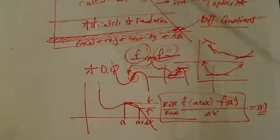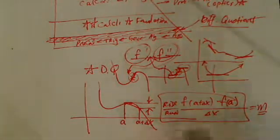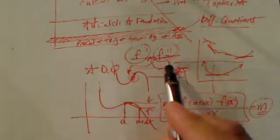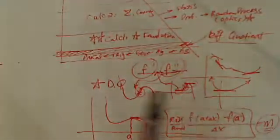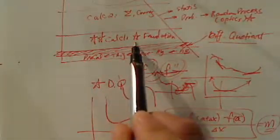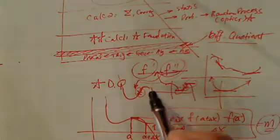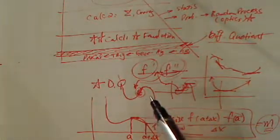So difference quotient is really just about slope, which is a foundation for finding derivatives. Derivative is what all calculus one really cares about. Given a function, can I find local minimum, local maximum, can I find the inflection point.